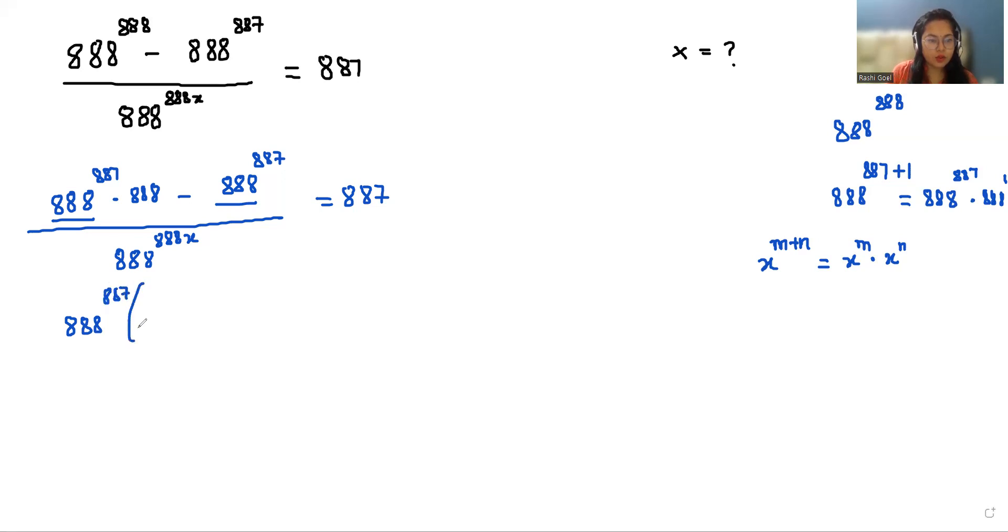So what is left: 888 minus 1 divided by 888 power 888 x equals 887. Now after subtracting, 887 equals 887.